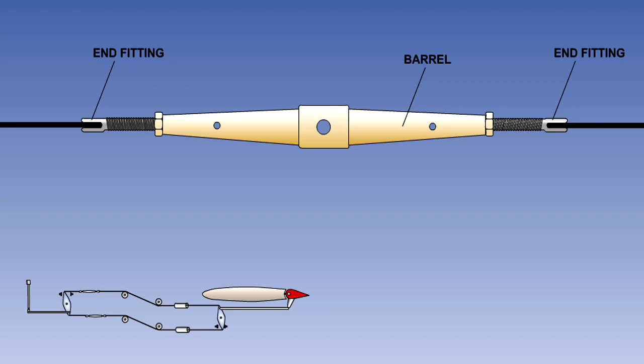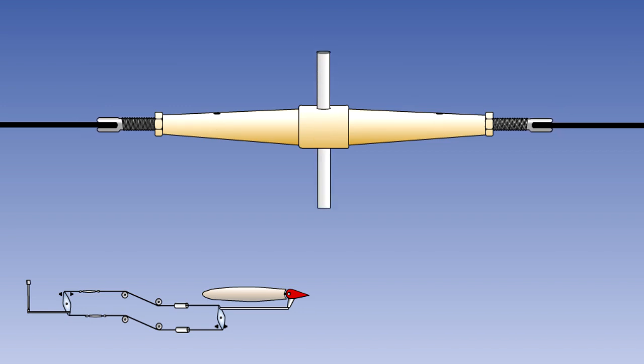Here we show a typical turnbuckle. It consists of a central barrel and two end fittings screwed into the barrel, one with a right-hand thread and the other with a left-hand thread. The cable is attached to the end fittings. The cable tension is adjusted by rotating the central barrel, causing the end fittings to screw either into or out of it.